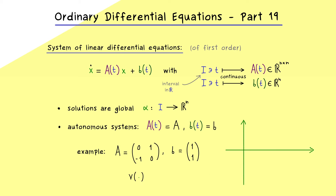We put some points into V of x, which is simply A times x plus the vector B. Starting with the point (1, 0), this gives us 1 in the first component and 0 in the second, so the vector simply points to the right. With (0, -1) we get the vector (0, 1) out. And if we put in (1, -1), we get out 0. Therefore this is actually our origin — this immediately gives us a constant solution, so we have a fixed point there.